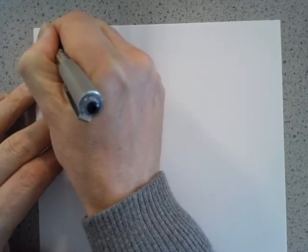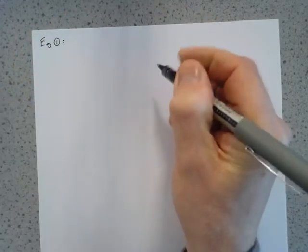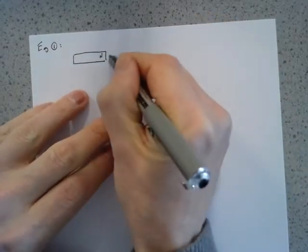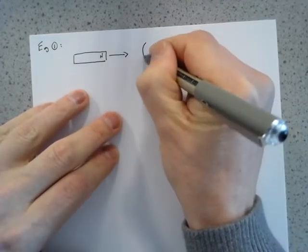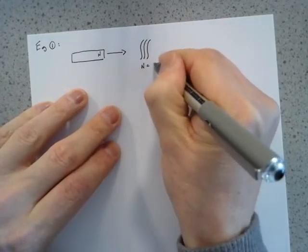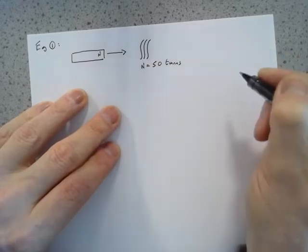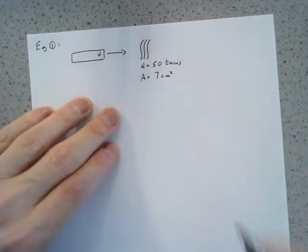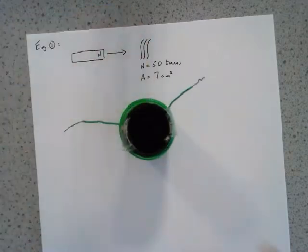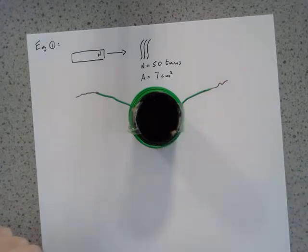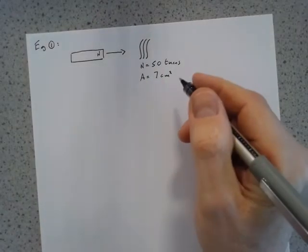Let's solve this one. So this is example one. We have a magnet with its North Pole end being pushed or moved into a coil. The coil has 50 turns and a cross-sectional area of seven centimeters squared. By that, what we mean is if that's the coil, like the one we looked at earlier, the cross-sectional area is this area.